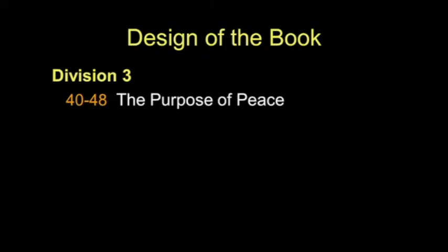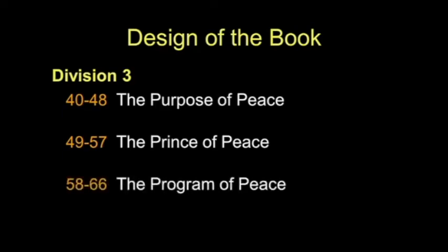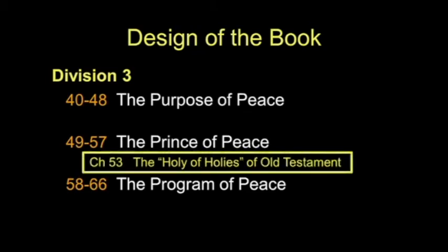The main event is division three. Chapters 40 through 48 are the purpose of peace. Chapters 49 to 57 are the prince of peace. And 58 to 66 will be the program of peace. The highlight of division three is chapter 53 — many people call it the holy of holies of the Old Testament. It's exactly in the middle, preceded by 13 chapters and followed by 13 chapters. It's also bracketed by the phrase "There is no peace, saith the Lord to the wicked." That's our target as we prepare ourselves for this third division.